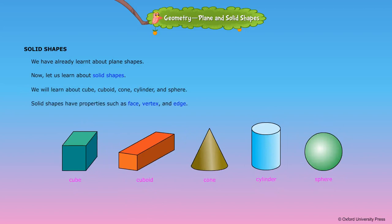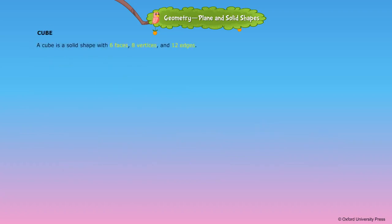Cube: A cube is a solid shape with 6 faces, 8 vertices, and 12 edges. All the faces are of the same size.